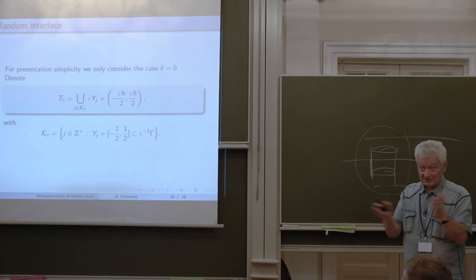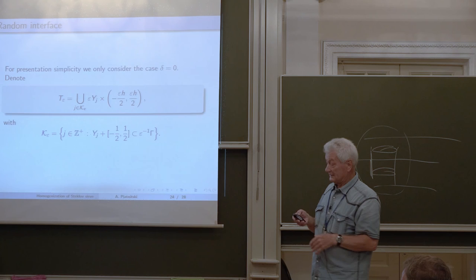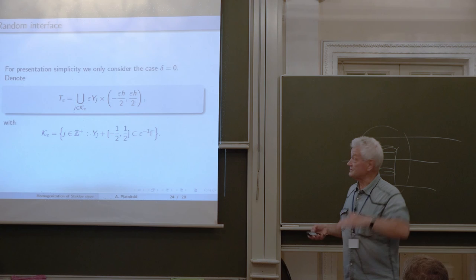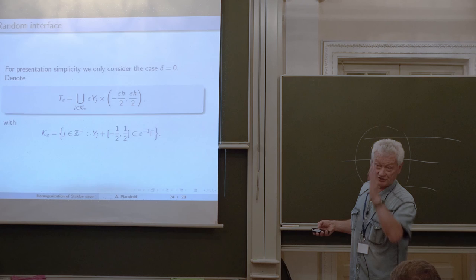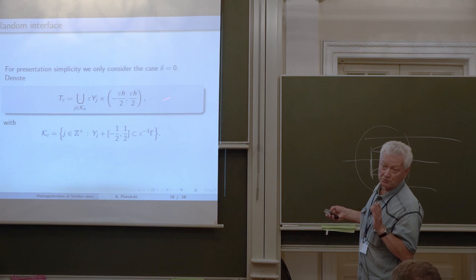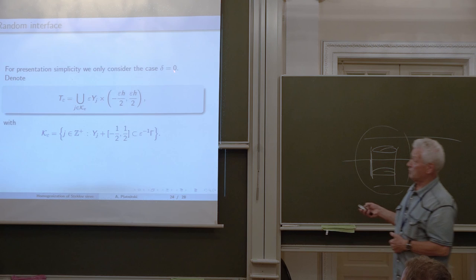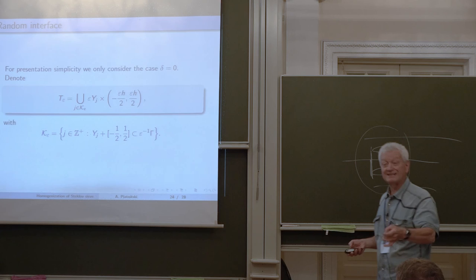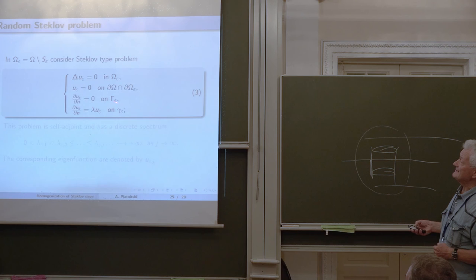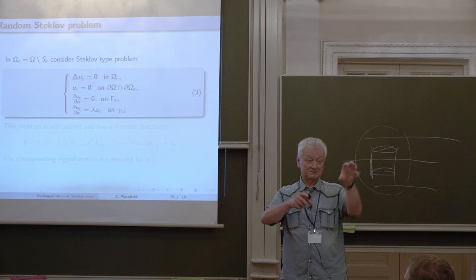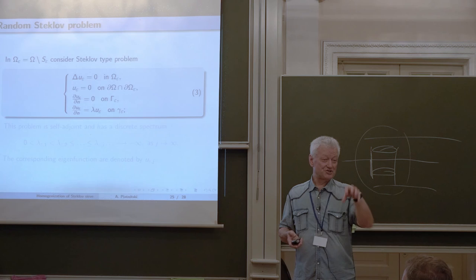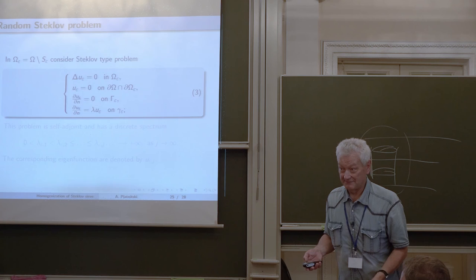We rescale this set by parameter 1 over epsilon — multiplying the set by epsilon — and consider the collection of cylinders whose cross-sections are these random sets y_j and whose vertical direction is again epsilon times h. For simplicity I consider only delta equal to zero here, though delta greater than zero can be handled the same way. Again, we consider only cylinders completely inside the domain omega. We consider the same Steklov problem, but now the geometry is random.